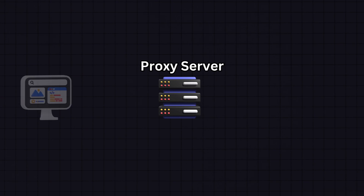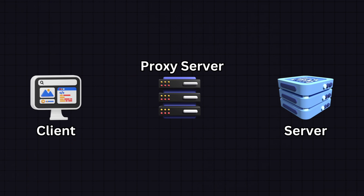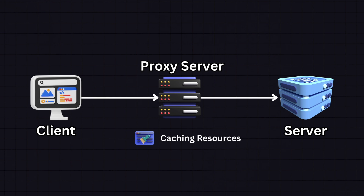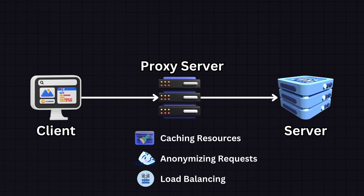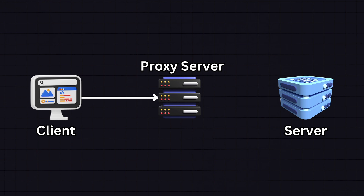A proxy server acts as an intermediary between a client requesting a resource and the server providing that resource. It can serve various purposes like caching resources for faster access, anonymizing requests, and load balancing among multiple servers. Essentially, it receives requests from clients, forwards them to the relevant servers, and then returns the server's response back to the client.